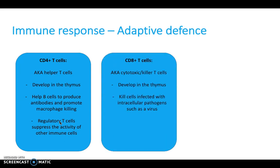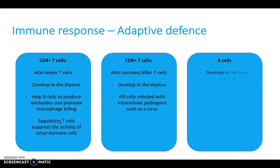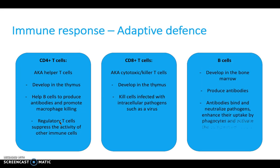CD8 T cells are cytotoxic or killer T cells. These also develop in the thymus but kill cells infected with intracellular pathogens such as a virus. B cells develop in the bone marrow and produce antibodies. Antibodies bind and neutralize pathogens, enhance their uptake by phagocytes, and activate the complement system.